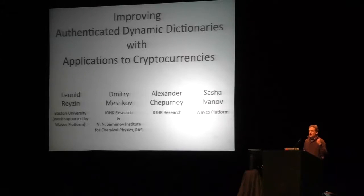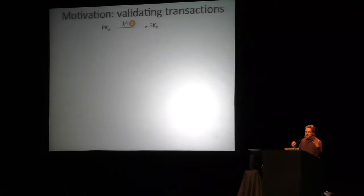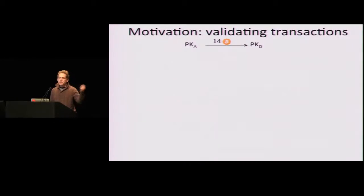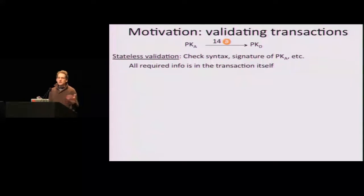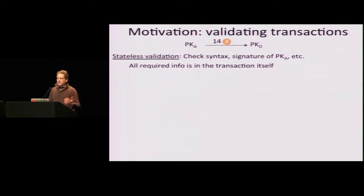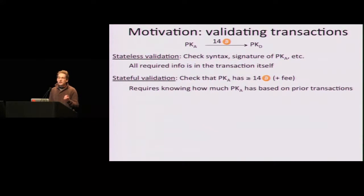I'll explain what they are and how we apply them to cryptocurrencies. So here's our motivation. You've got Alice who wants to pay 14 bitcoins to David, and she writes a transaction about that, and you want to validate the transaction. Part of the validation is stateless — you look at the transaction and check the syntax, the fields have been filled in, they all match, and there's a digital signature of Alice's public key. But the big piece that's hard to validate is actually making sure that Alice has those 14 bitcoins or more to give away.